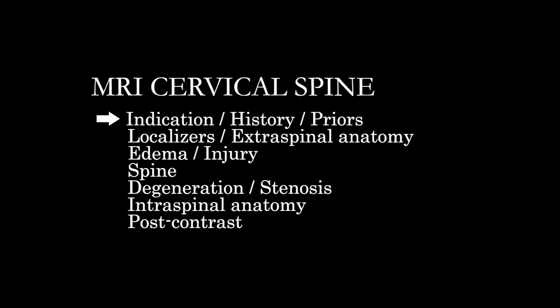As an approach to the cervical spine, we'll first take a look at everything outside the spinal anatomy itself, looking at the incidentally imaged lower aspect of the head, the upper thorax, the soft tissues, paravertebral and prevertebral soft tissues — and you have to be careful to look at the localizers for those. Then we're going to look at the STIR images for edema and injury, any sort of abnormal fluid signal, and then correlating between the different sequences.